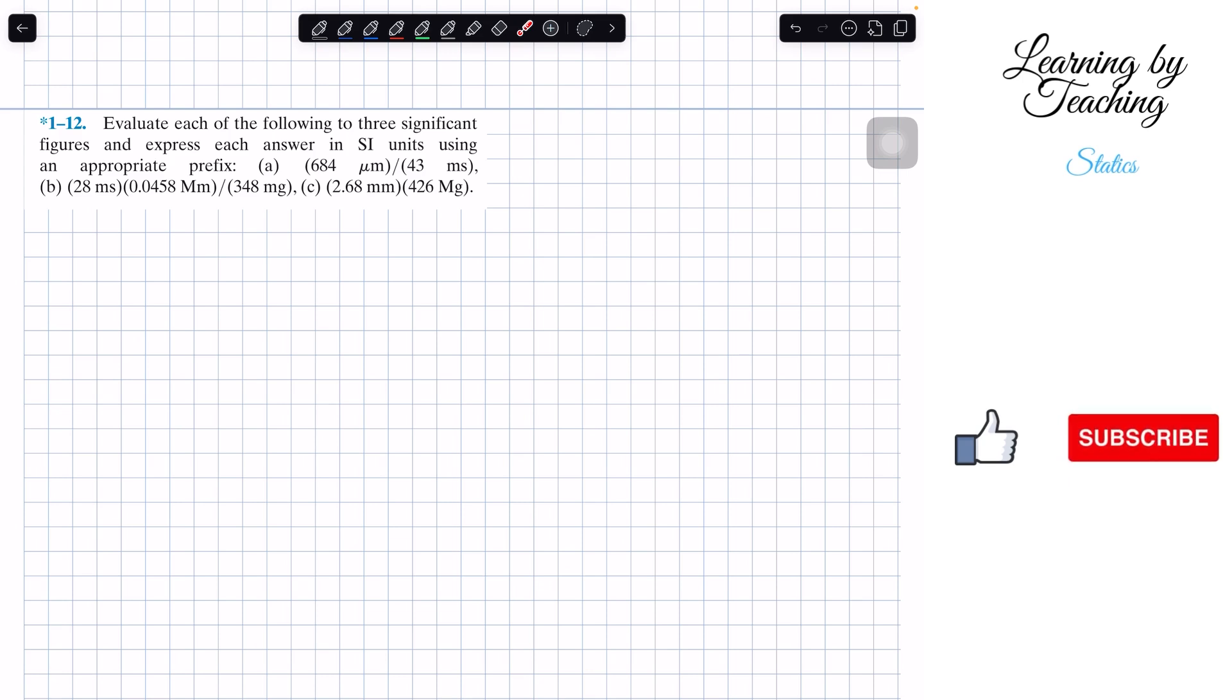We've got problem A, B, and C. So let's start with problem A. They're giving us 684 micrometers and we're going to divide it all by 43 milliseconds. I'm going to explain this tactic in problem A and then we will use them for B and C. The first thing I'm going to do is convert these prefixes into their exponential form so we can do the multiplication and division.